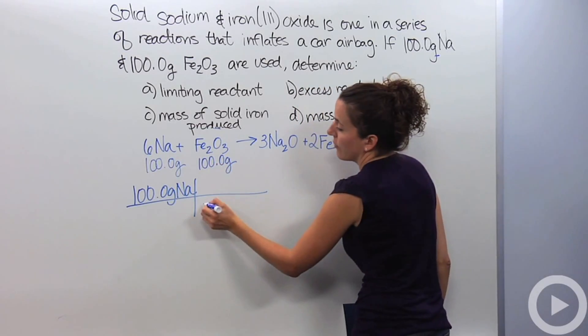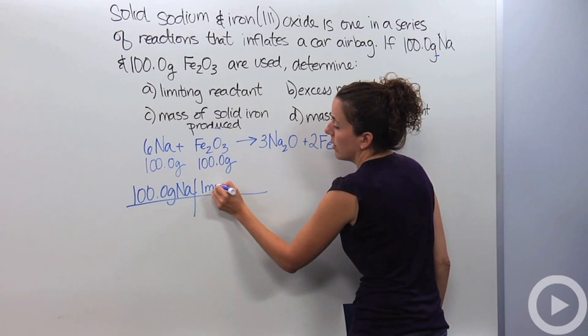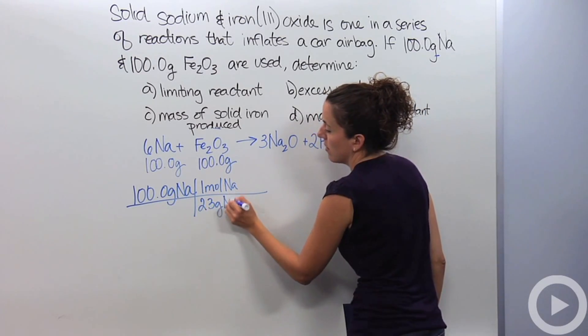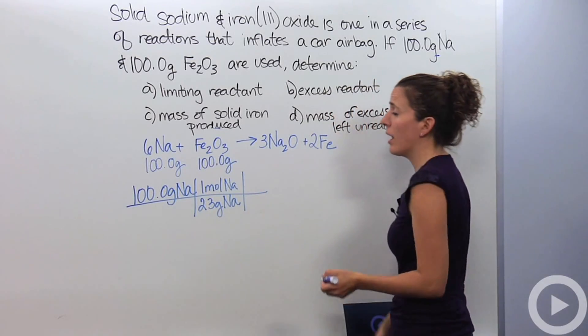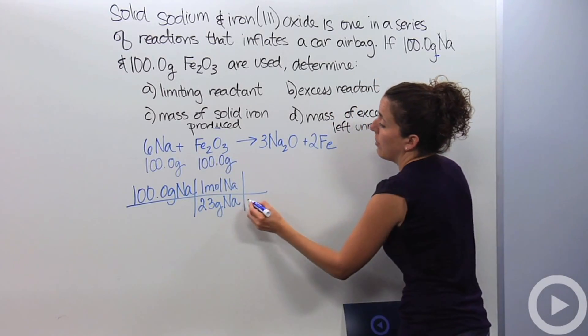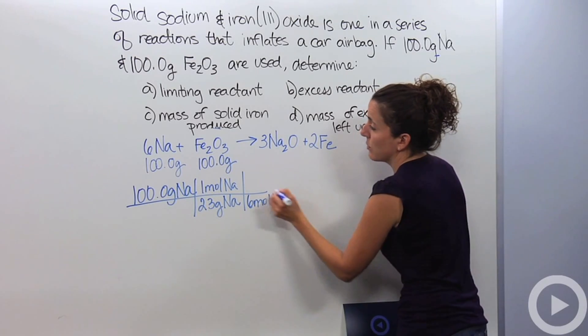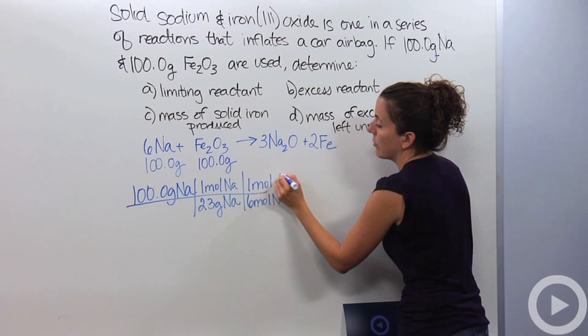So, I'm going to say for every one mole of sodium, I know from my periodic table that it's 23 grams of sodium. I also know from my reaction, I require six moles of sodium to react with one mole of iron three oxide.